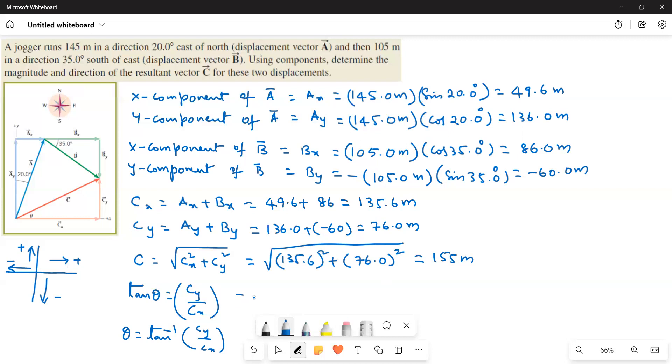And then tan theta is equal to 76 divided by 135.6 is equal to 0.5604. And then theta is equal to tan inverse 0.5604, that is equal to 29.26 degrees or theta is equal to 29 degrees.